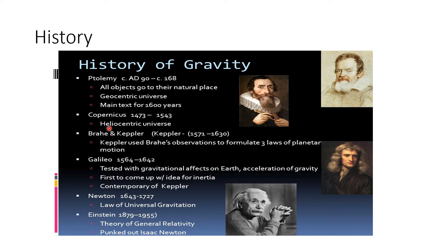Then came another scientist, Copernicus. Copernicus gave the heliocentric theory. The heliocentric theory says that the Sun is at the center, and all the other planets including Earth revolve around the Sun. This is correct.